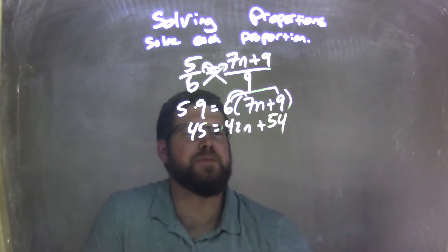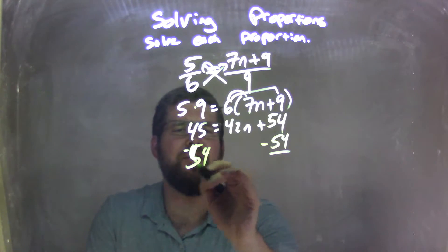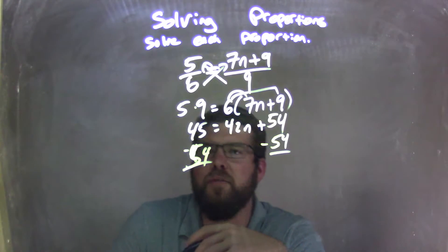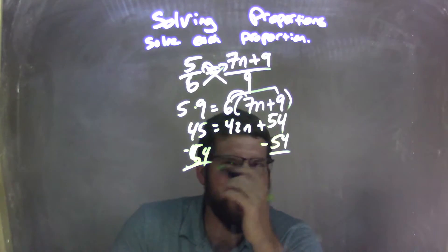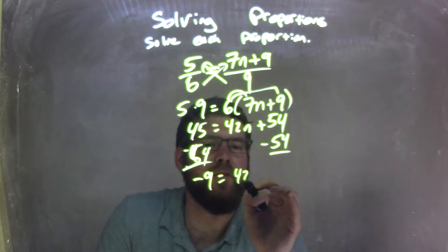So now let's bring our like terms together, so I'm going to subtract 54 from both sides. So 45 minus 54 is a negative 9 equals 42n.